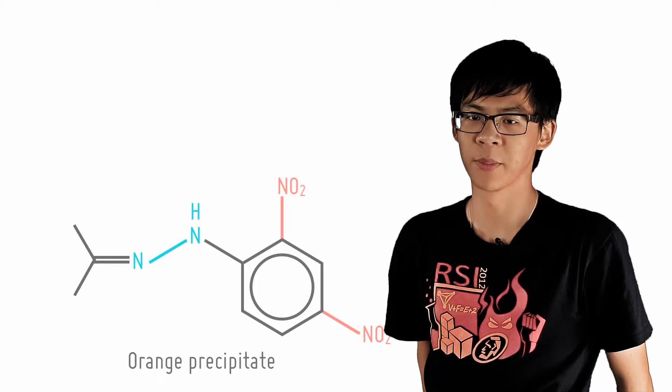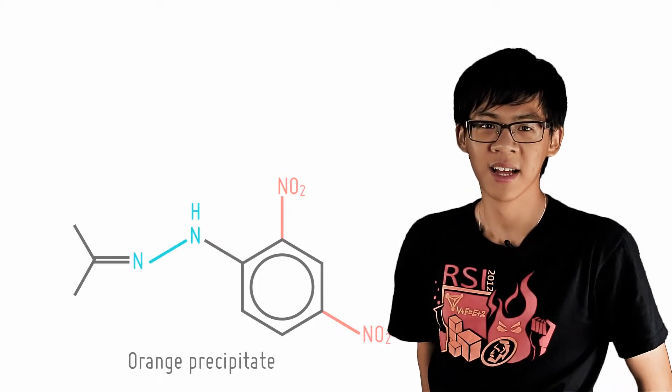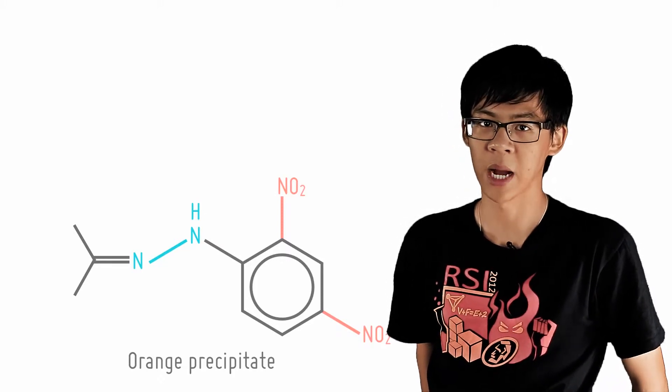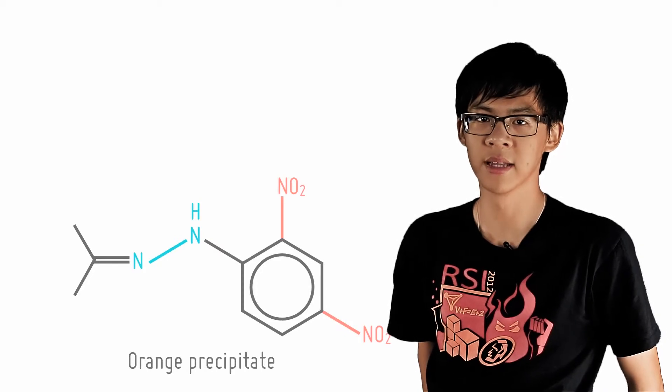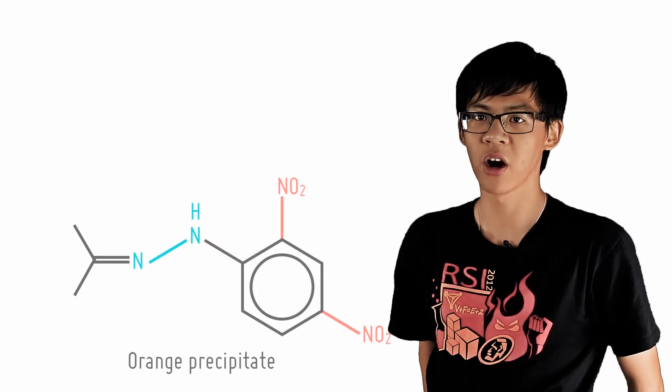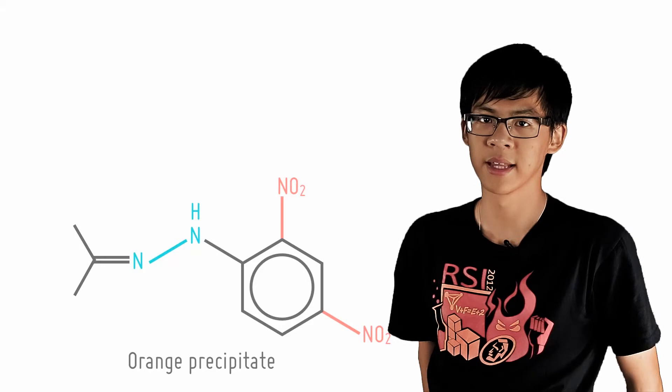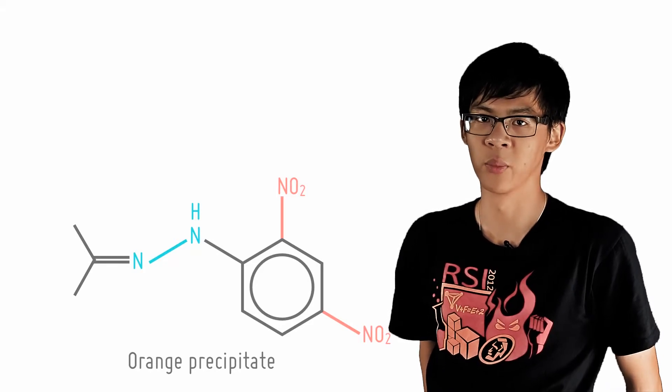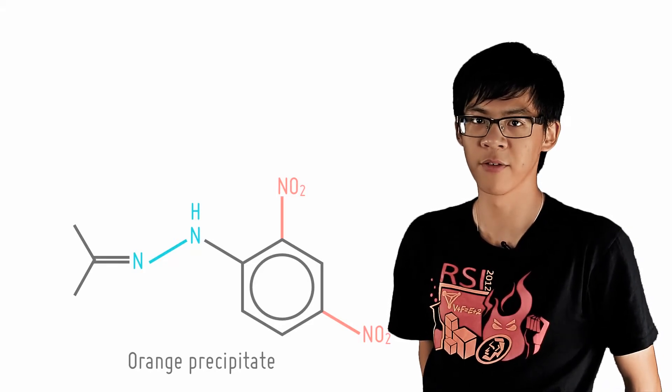Again, it is important to know how to draw the product of this reaction. This reagent is commonly used to identify carbonyl compounds because 2,4-dinitrophenylhydrazones are actually orange colored solids. You can tell that a compound is an aldehyde or a ketone when an orange precipitate forms on adding 2,4-DNPH.